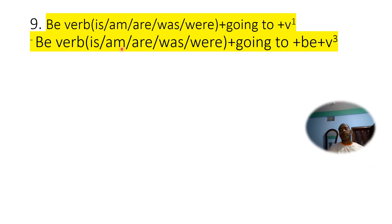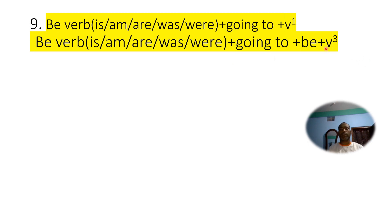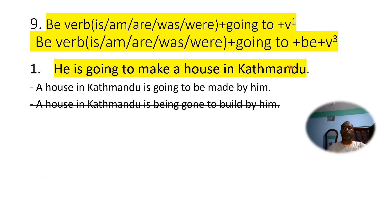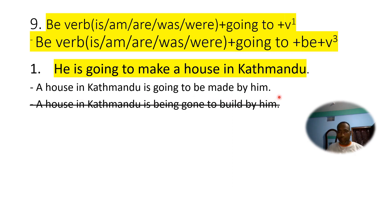When we find 'is/are/was/were plus going to plus verb one,' we should not change 'going to' but keep it intact and only change 'to verb one' into 'to be plus verb three.' For example: 'He is going to make a house in Kathmandu' becomes 'A house in Kathmandu is going to be made by him.' We should not make it 'is being gone to build' — that is incorrect.